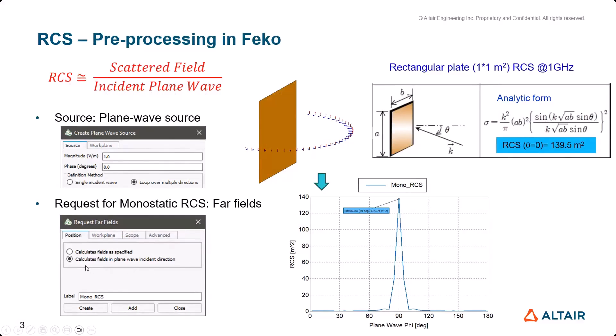By checking 'calculate field in plane wave incident direction'. For example, let's calculate RCS value of a rectangular plate whose size is 1 by 1 square meter at 1 GHz. According to analytic form, you can calculate RCS value at normal incidence: 139.5.